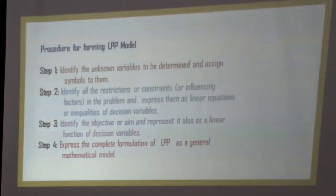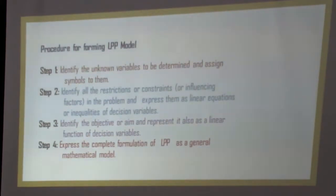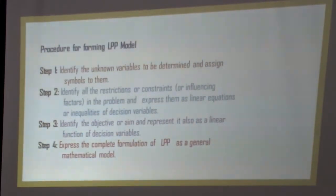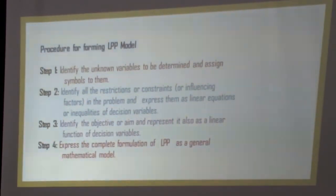The procedure for forming an LPP model: Step 1 — identify the unknown variables to be determined and assign symbols to them. Step 2 — identify all the restrictions or constraints in the problem and express them as linear equations or inequalities of decision variables. Step 3 — identify the objective and represent it as a linear function of decision variables. Finally, express the complete formulation of LPP as a general mathematical model.